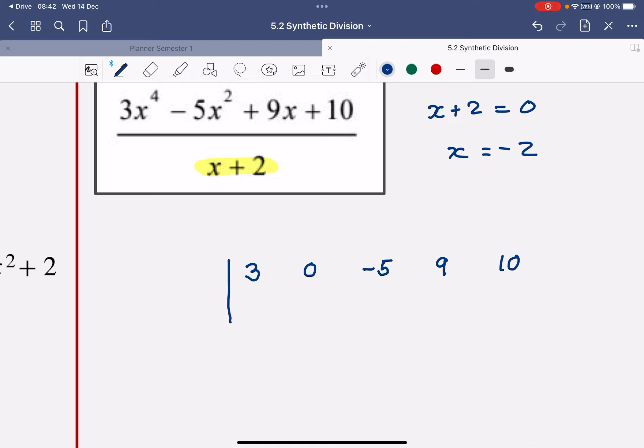Now I am going to take this as negative 2. I'm going to drop down the first coefficient without doing anything to it. So that 3 just drops down. Now I'm going to multiply that 3 that I just dropped down by negative 2, the green number, and I get negative 6. I'm going to add these numbers together. So 0 and negative 6 is negative 6.